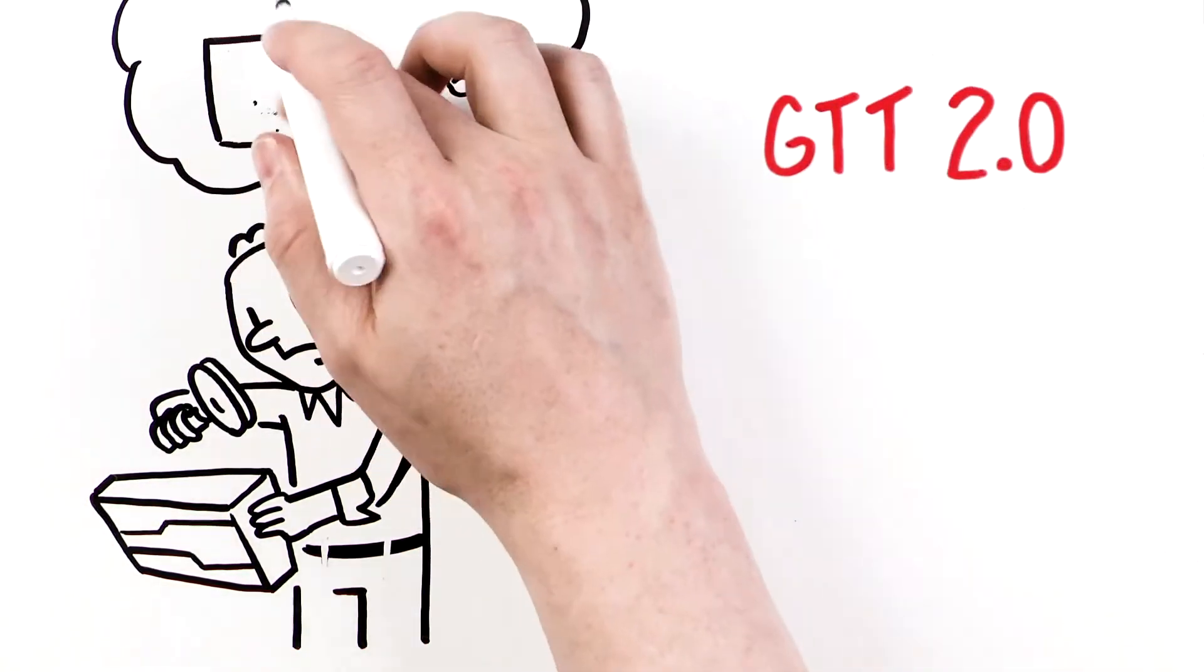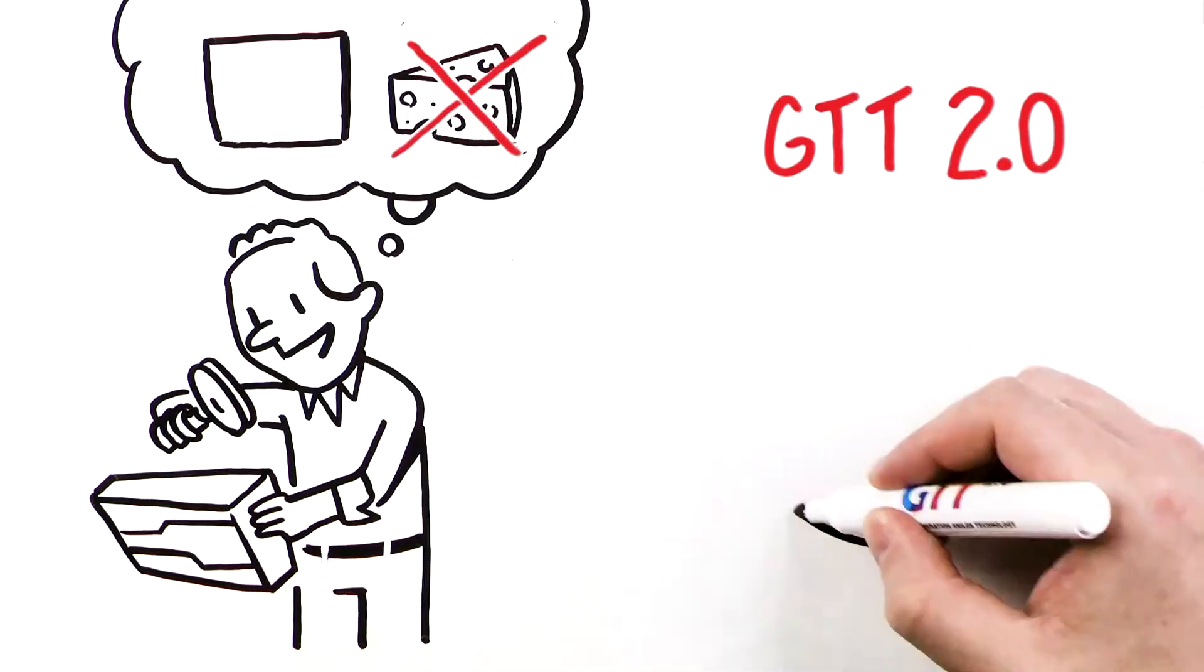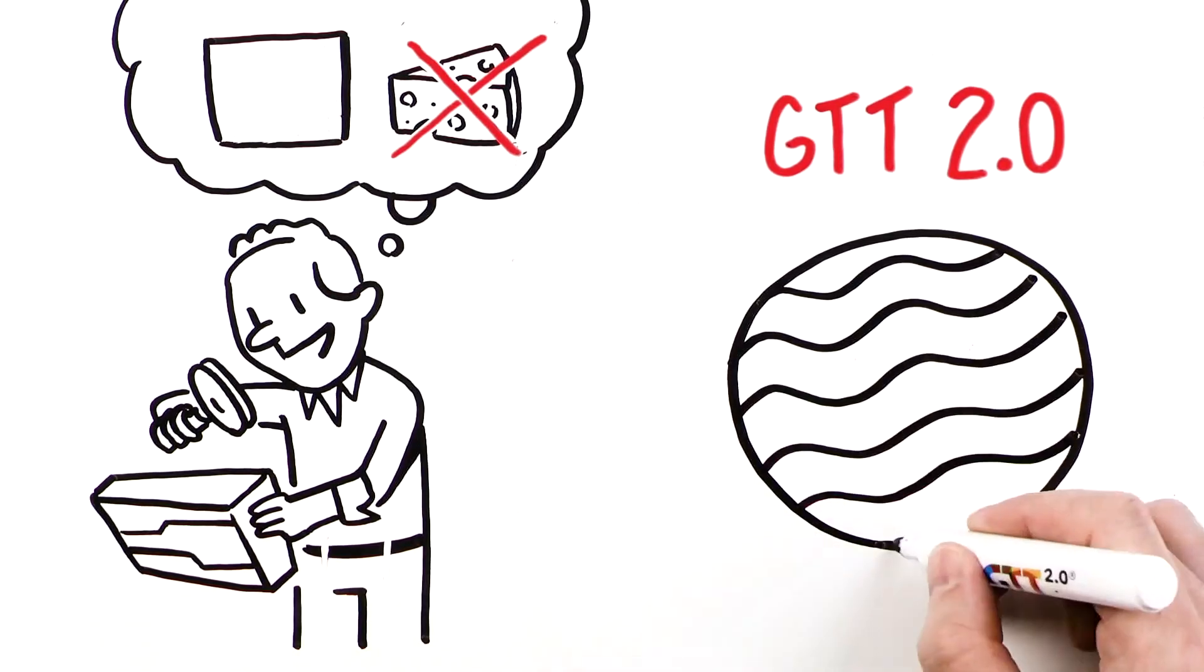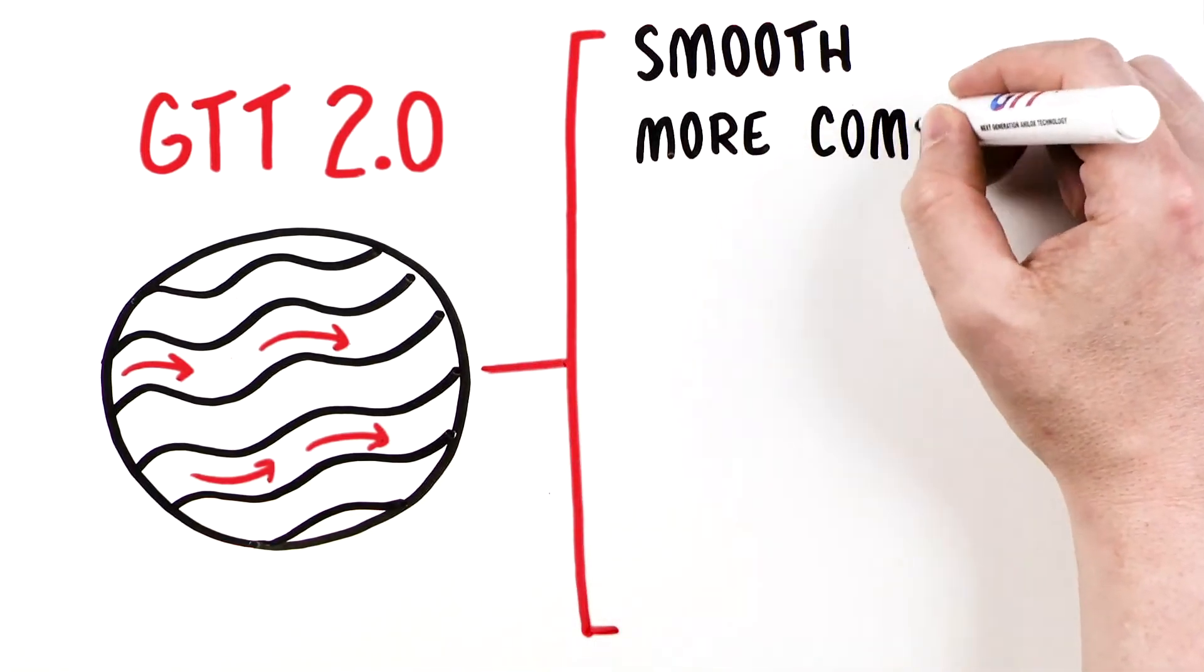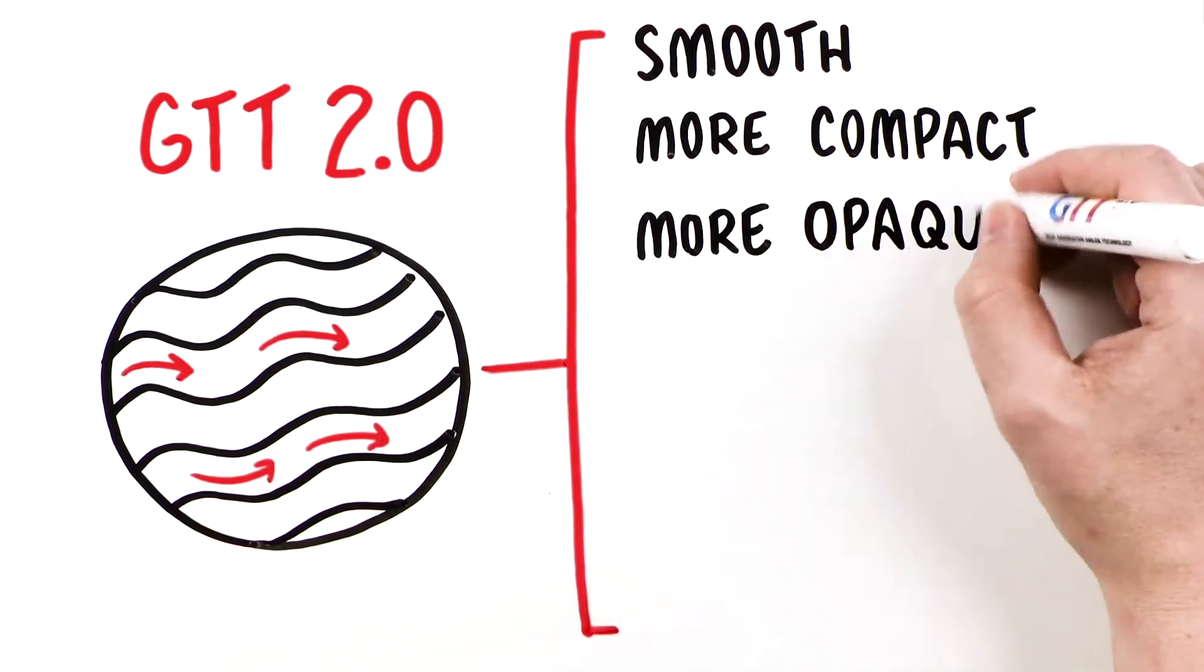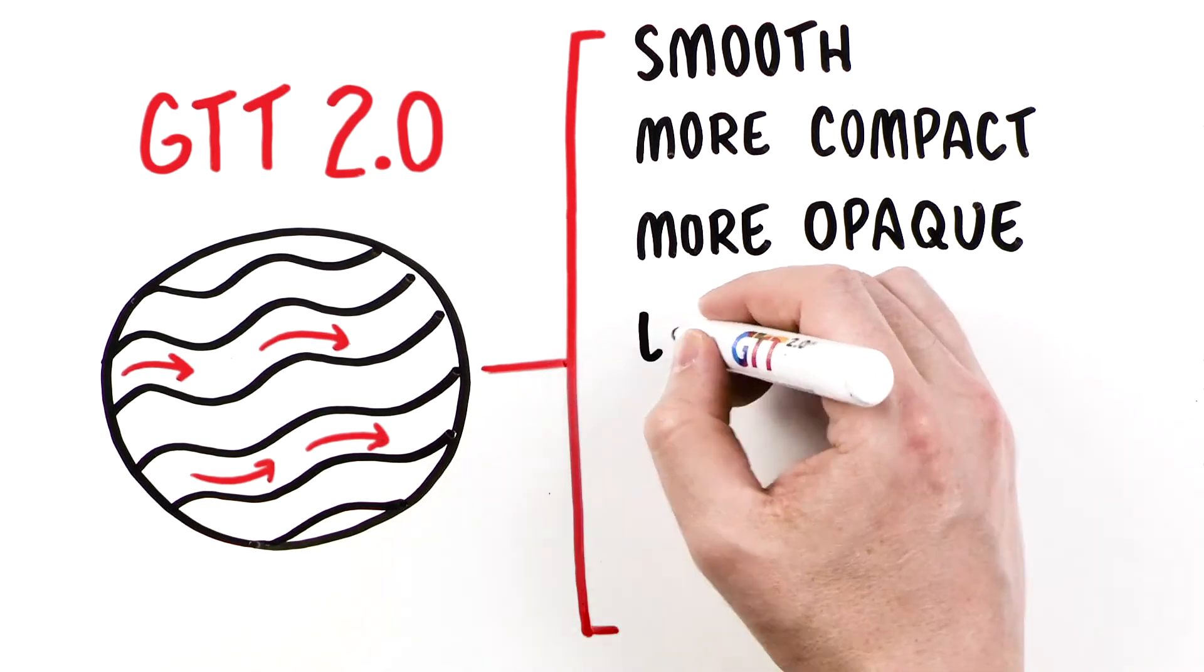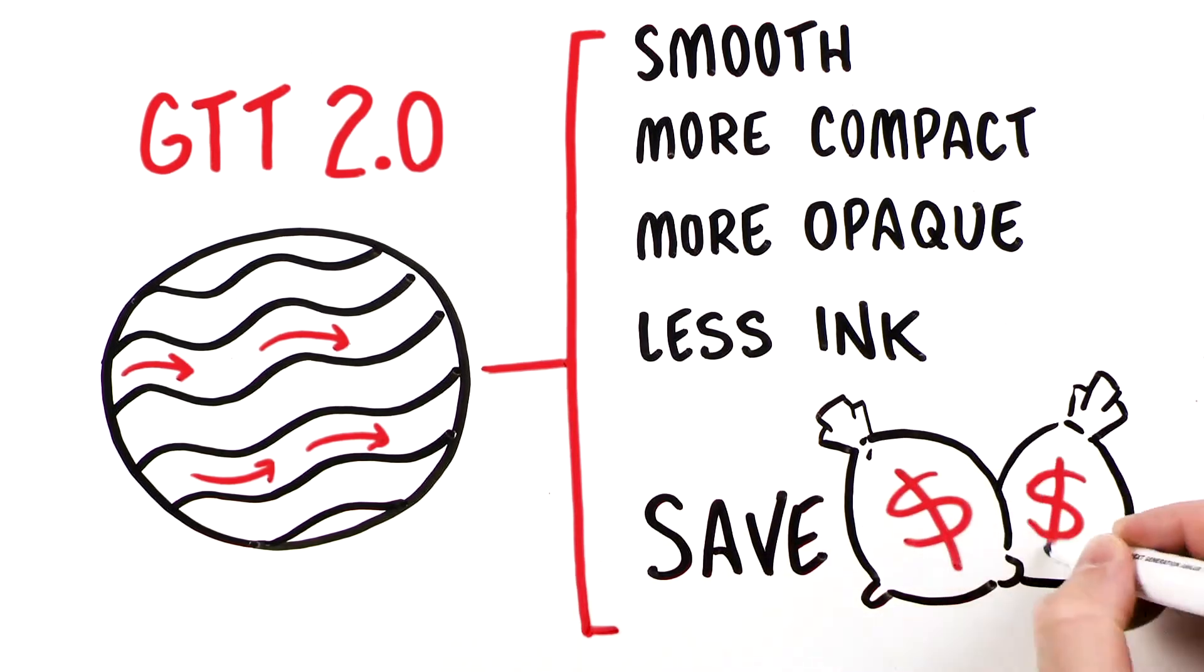GTT 2.0 eliminates ink aeration with its patented open-wave construction, which never traps air. This ensures not only smoother, more compact, and more opaque laydown, but higher opacity with less ink, saving you significant amounts of money.